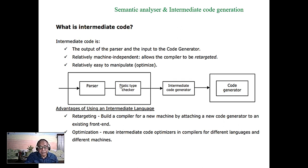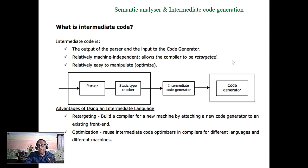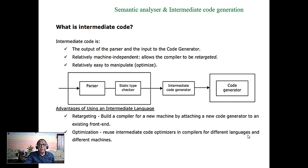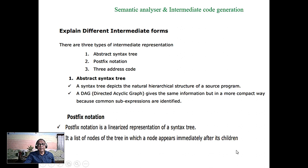In languages like Java and C, a lot of things can be checked by the static type checker, but not in Python because Python checks types at runtime. Intermediate code is code which can be optimized independent of the target computer.